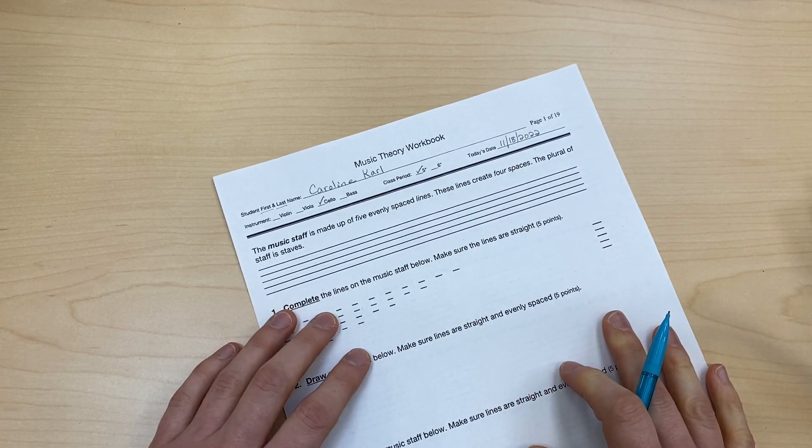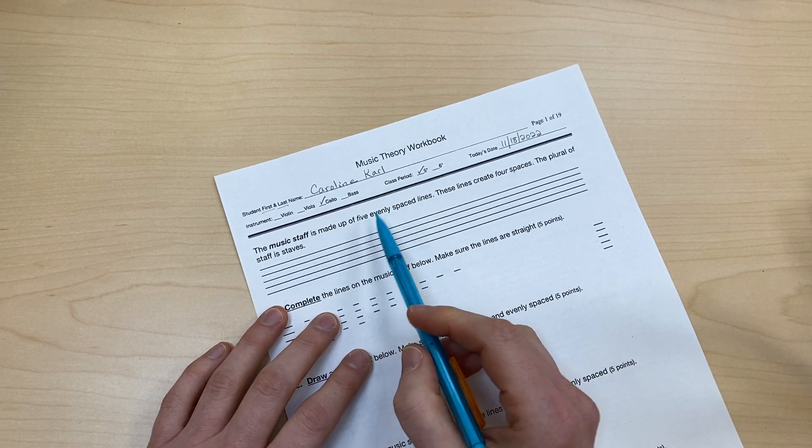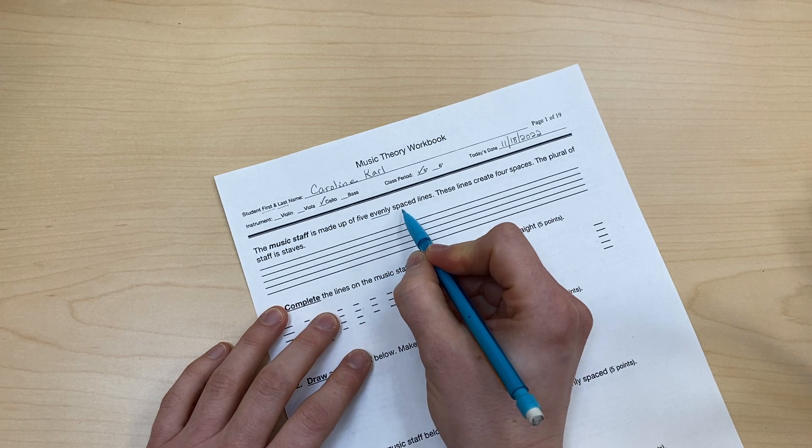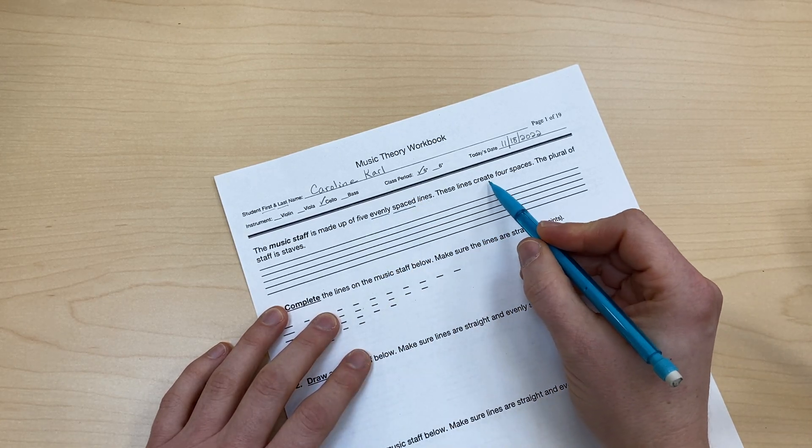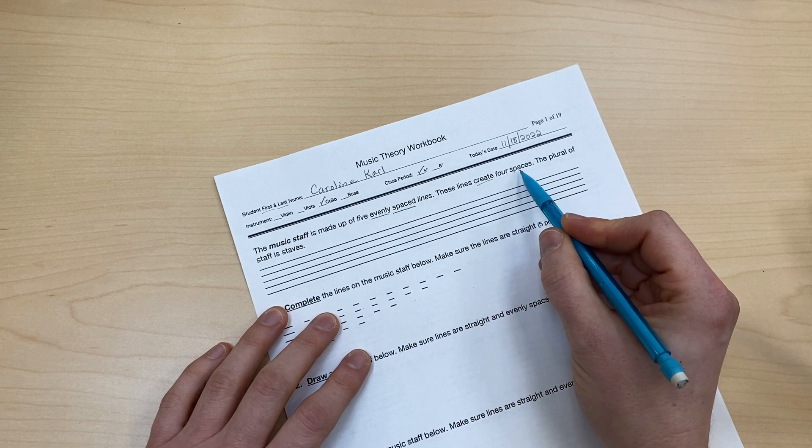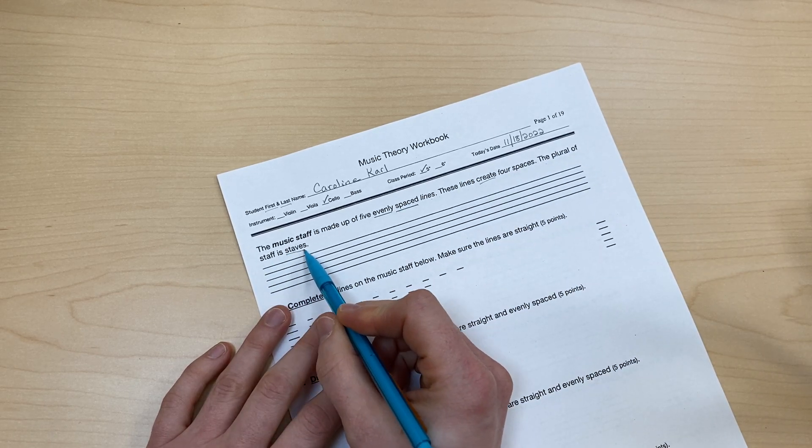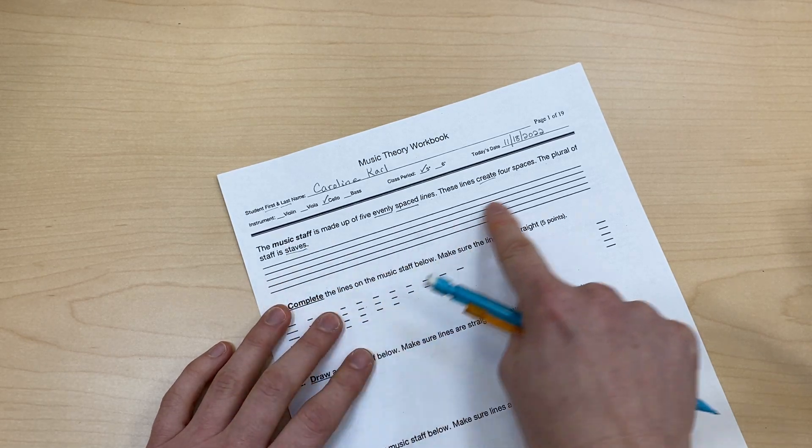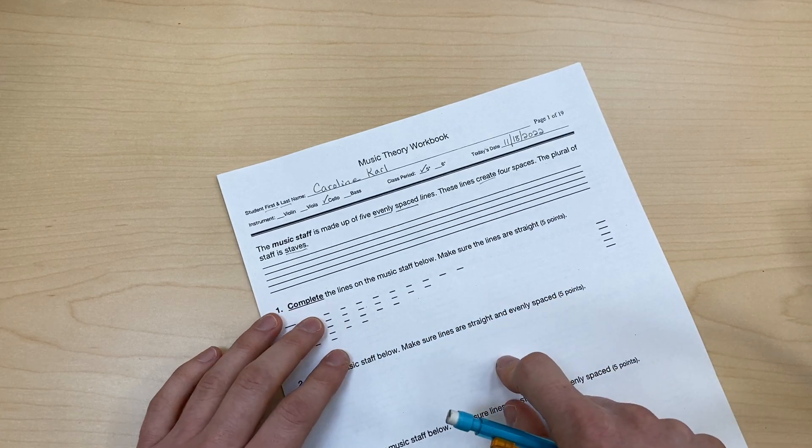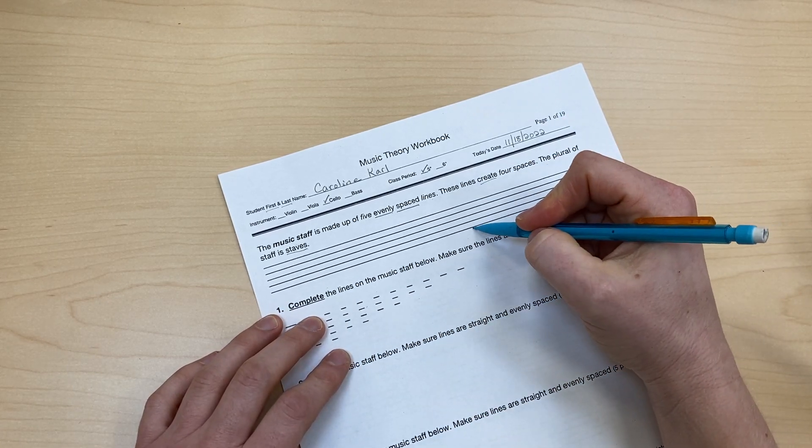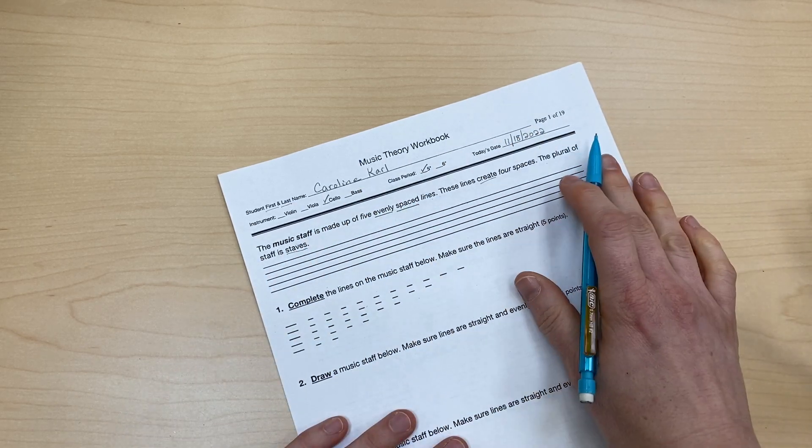Let's read the first directions. The music staff is made up of five evenly spaced lines. These lines create four spaces. The plural of staff is staves. So this is one music staff, but if we had multiple, they would be staves. Now I can see here that I have one, two, three, four, five lines. So this is just explaining it.